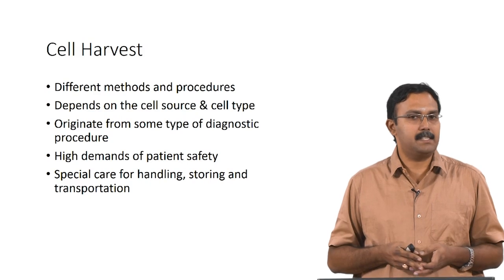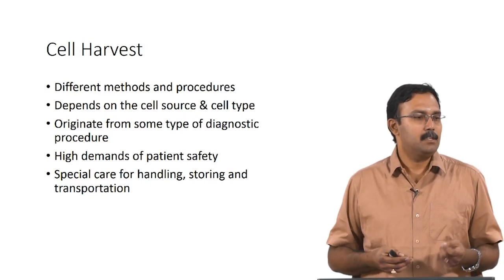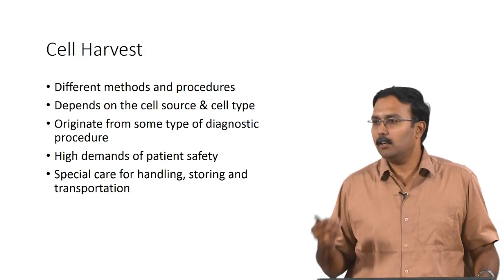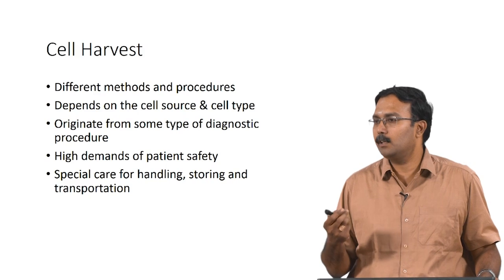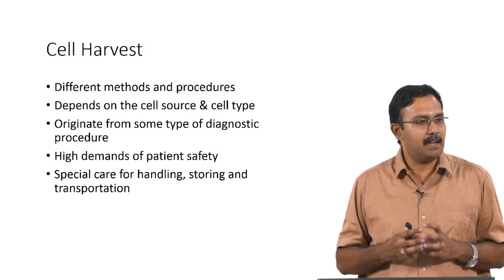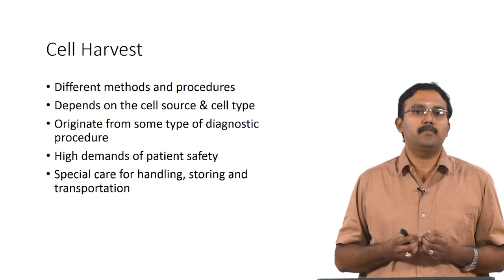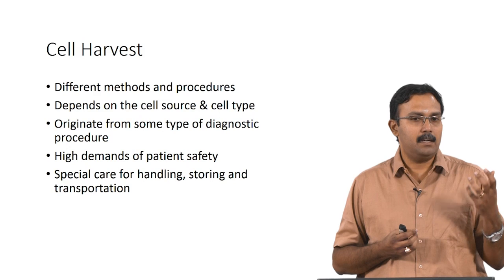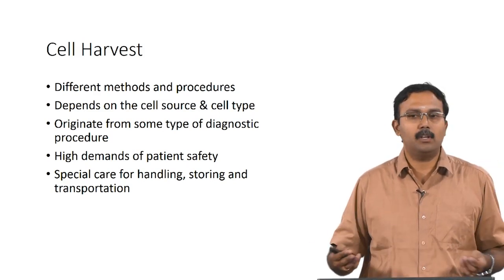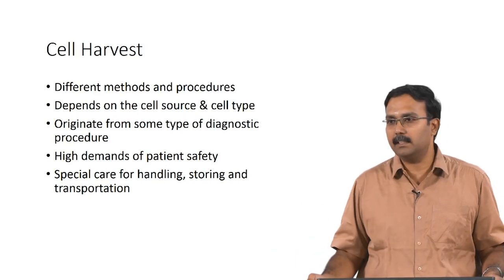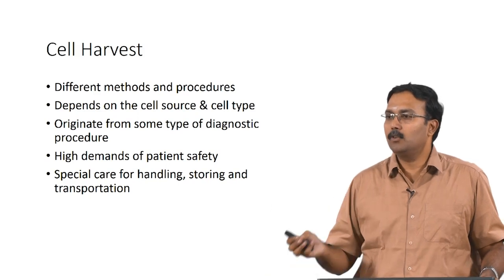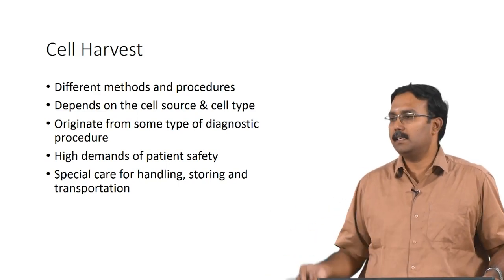The first step is harvesting the cells. There are different methods and procedures, and the method you use would depend on the cell source or cell type. Depending on the tissue you are going to extract, you will use different techniques. Most of these cell harvesting techniques actually come from some type of diagnostic procedure — tissues are taken for studying pathology or checking some disease condition, and these same techniques are used for cell harvesting.